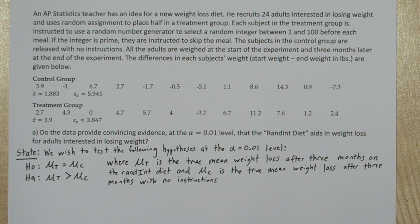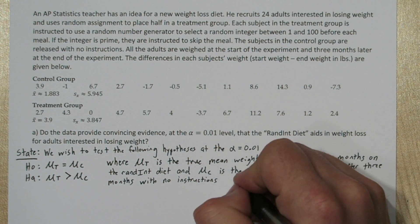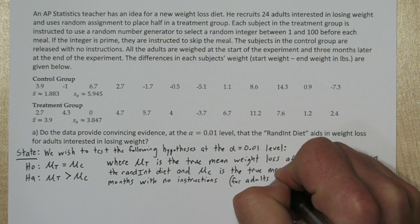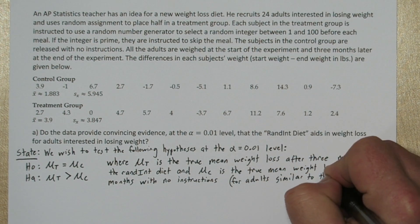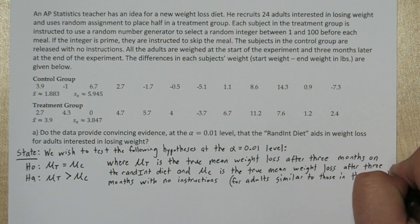Now, since the teacher recruited 24 adults interested in losing weight, our scope of inference is only for adults similar to that group. So we'll say for adults similar to those in the study.